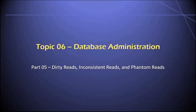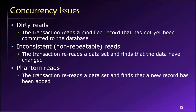Welcome back. In this video, part five of topic six in our database class, I'm going to discuss dirty reads, inconsistent reads, and phantom reads. The lost update problem shows how, when you have multiple people trying to work with the same data at the same time, it's easy to lose track of things unless we have specific mechanisms in place to prevent it. That is a concurrency issue, and we can talk about these concurrency issues more formally by studying the three different types of concurrency control problems.